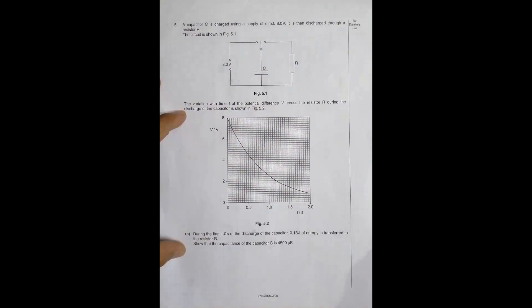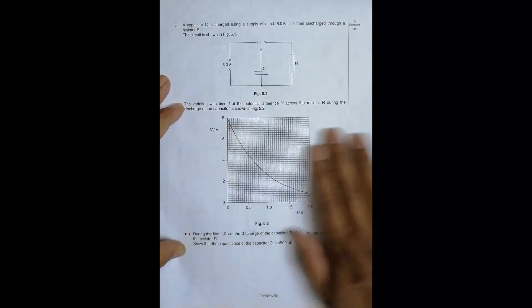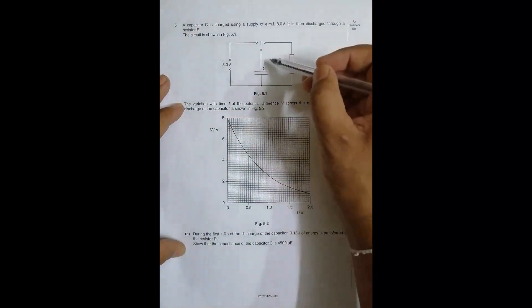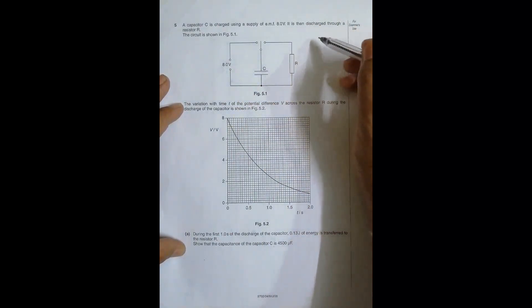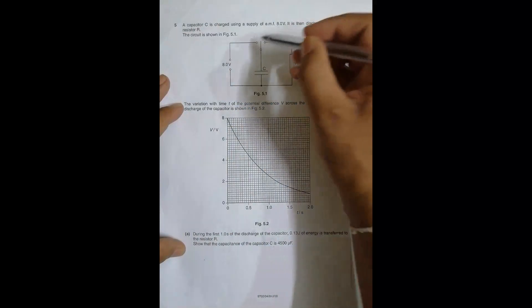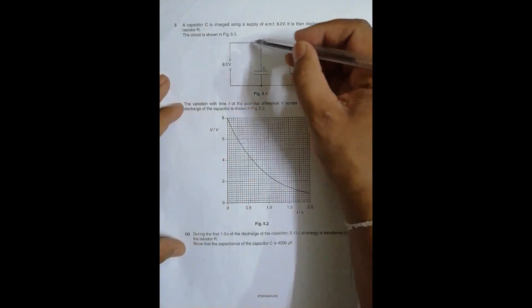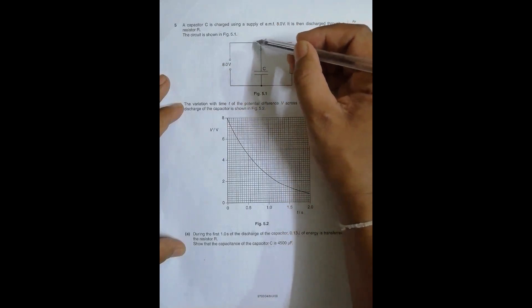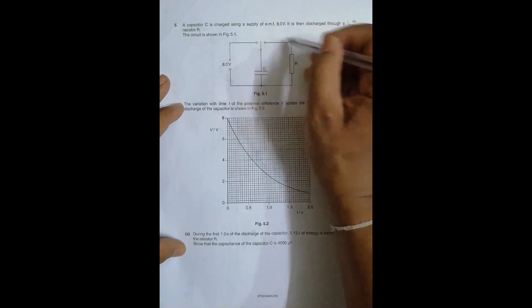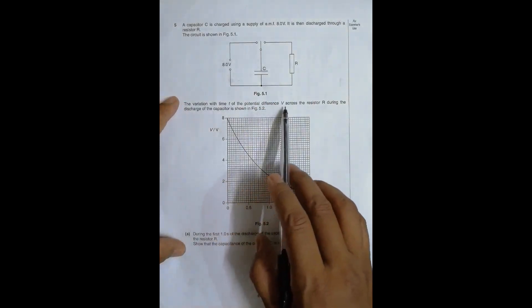Hello folks, this is 2008 May/June Paper 4, question number 5. It is concerned with the topic of capacitors. A capacitor C is charged using a supply of EMF 8.0 volts, then discharged through a resistor R. If connected one way the capacitor charges; connected the other way, it disconnects from the cell and connects to the resistor to discharge.